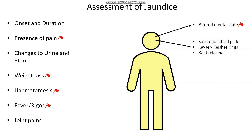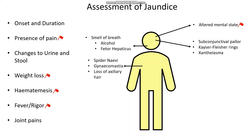Look for xanthelasma — a buildup of yellow cholesterol deposits around the eyes. Check what their breath smells like — is there any alcohol? This might point to alcohol abuse or chronic liver disease. Fetor hepaticus is an awful rancid smell of rotten eggs and garlic, which comes about from acute liver failure. Over their chest, look for spider nevi, gynecomastia, or loss of axillary hair — all pointing to chronic liver disease, as you're unable to break down estrogen, causing the spider nevi, enlargement of breast tissue, and loss of axillary hair. Check for needle track marks, which may point towards intravenous drug use and viral hepatitis.